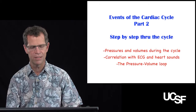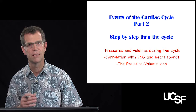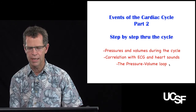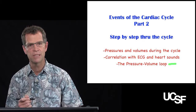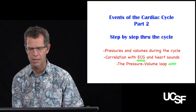Hello everyone, it's Dave here again with part two of the events of the cardiac cycle. In this part, we're going to take some of those concepts from part one and march our way through the events of the cardiac cycle, explaining how contraction and relaxation of the two chambers is accompanied by blood flow in from the veins and out into the arteries. At the end, we'll talk about the pressure volume loop, and we'll also discuss how the electrocardiogram relates to cardiac cycle events and how pressures, volumes, and heart sounds are all connected.